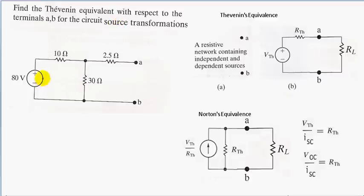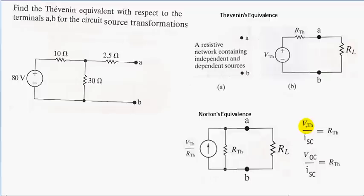Let's take the left-hand side: we have an 80 volt voltage source in series with a 10 ohm resistor. We'll use Ohm's law — V equals IR — and source transformation to transform it into a current source. The formula is V open circuit over I short circuit. Our V Thevenin's here is 80 volts.